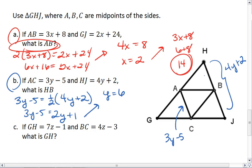But we want to find HB. We plug 6 into 4Y plus 2, giving us 4 times 6 plus 2. 26. So HB is...